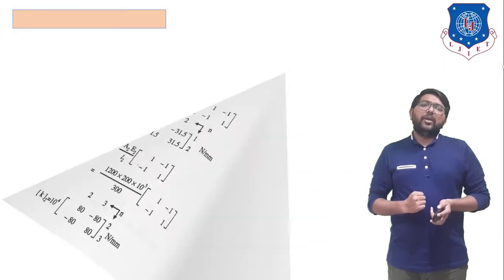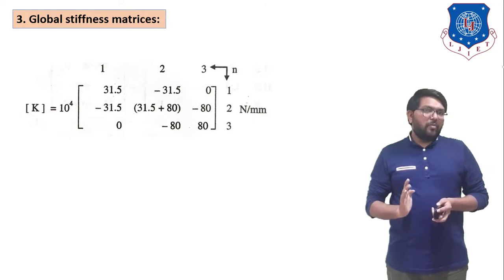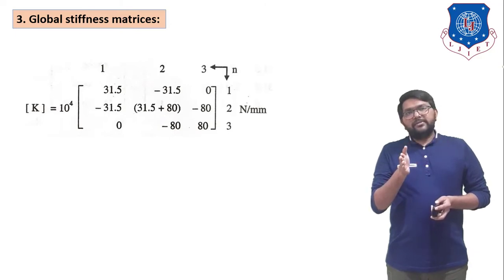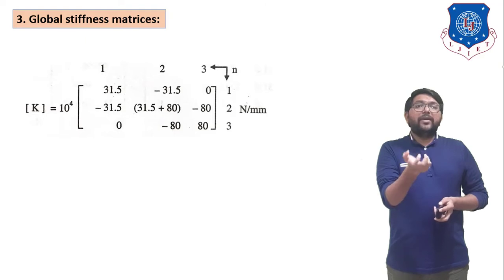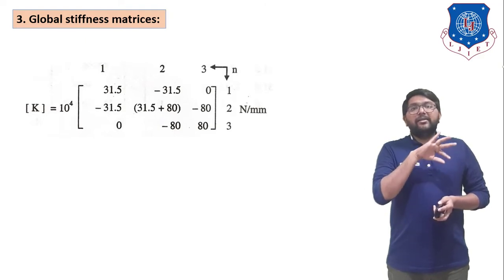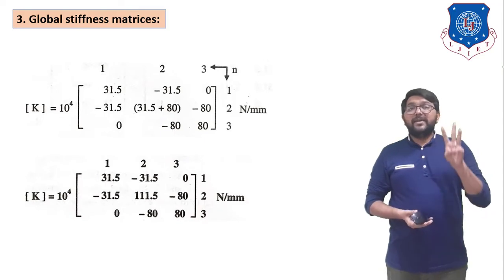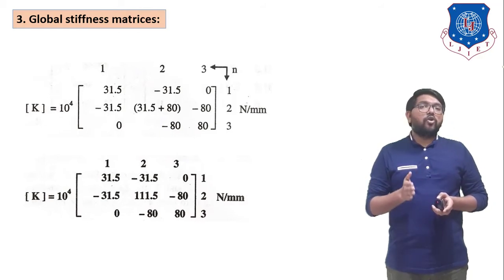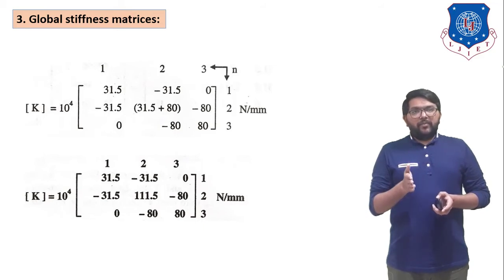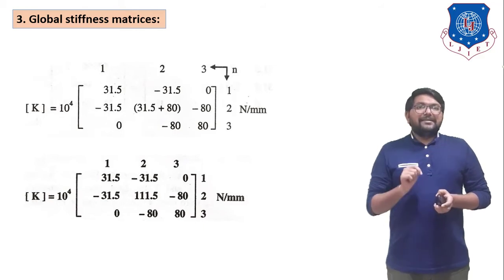Now we combine the two matrices to form the global stiffness matrix. Taking 10⁴ as common, overlapping values are added. The global stiffness matrix is 3×3 (because there are 3 nodes): K = 10⁴ × [31.5 −31.5 0; −31.5 111.5 −80; 0 −80 80], with rows and columns 1 to 3.